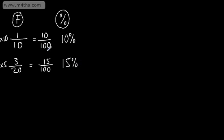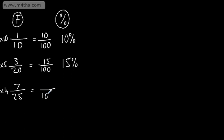All of these examples are straightforward, as the denominator is a factor of 100, so it goes into 100 exactly. Let's look at another one: 7 twenty-fifths. I know that 25 goes into 100, so I just need to write an equivalent fraction. If I multiply both the numerator and the denominator by 4, I get 100 in the denominator and 28 in the numerator, which gives me 28%.